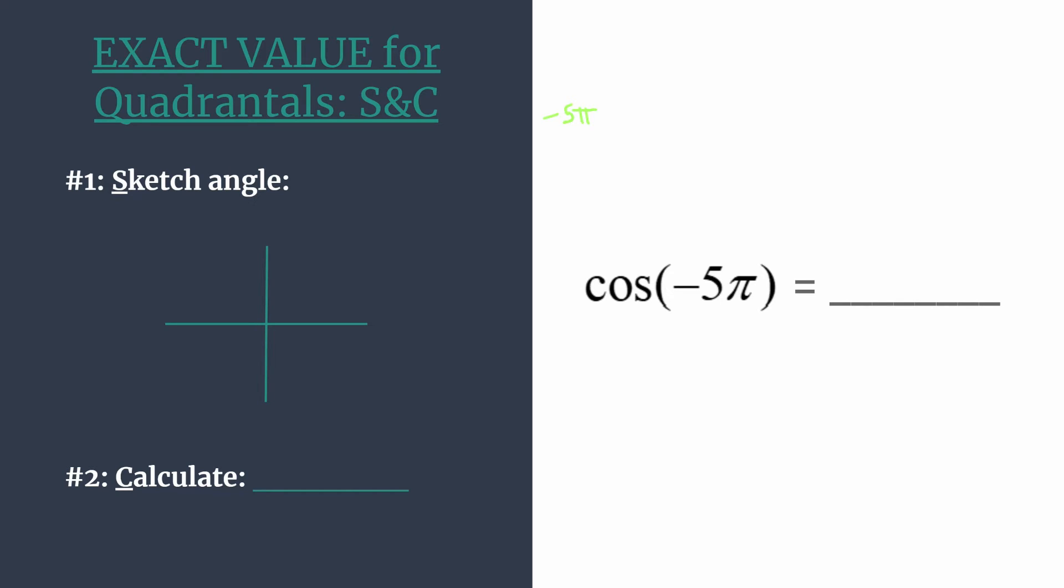So all you have to do to find coterminal angles is add 2π. So we can add 2π and we know that negative 3π would be coterminal to negative 5π. If you still weren't really happy with sketching that, just add another 2π and you'll get negative π. So negative π is coterminal to both negative 3π and negative 5π. The terminal side is in the same place; we just rotate differently to get there.